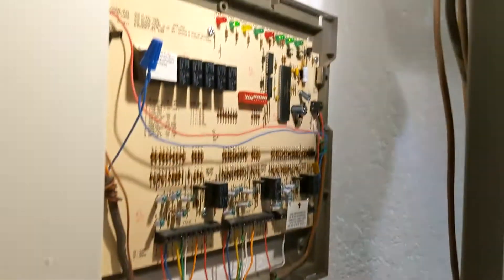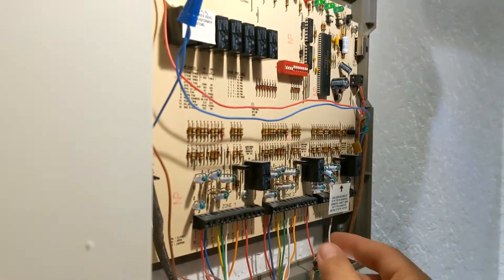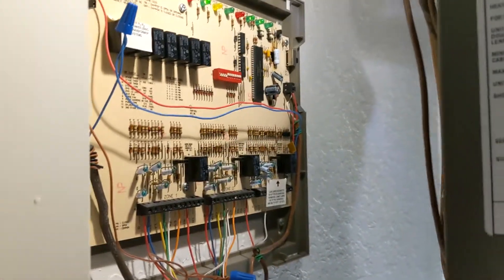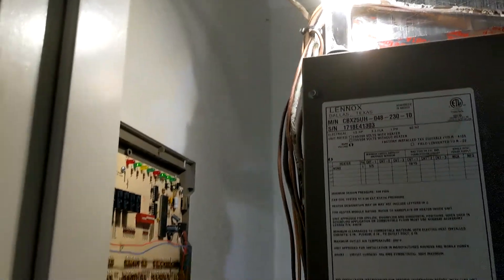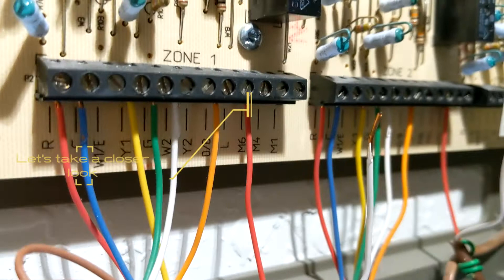So until I get a new zoning board, this is a good way to bypass it. You just remove the power to both dampers that you have, and they open up wide open, so now your unit won't freeze up.